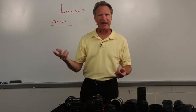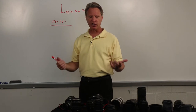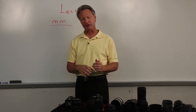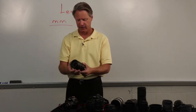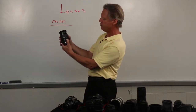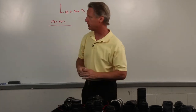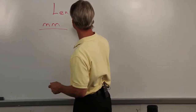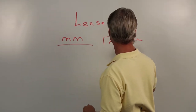So already we get information simply from the lens cap. Now, lenses are expressed in their focal length — not how big they are physically, but their focal length, again in millimeters. This lens says it is a 17-55mm zoom lens.